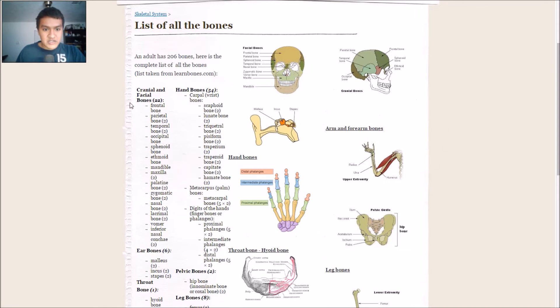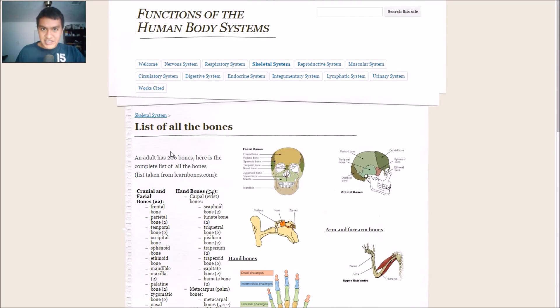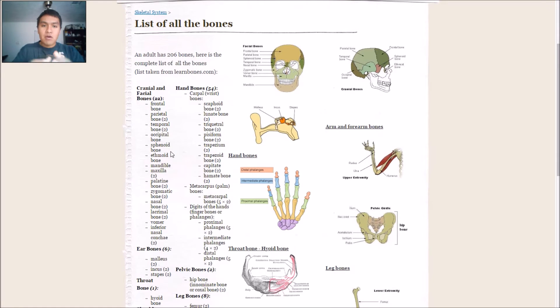I'm going to include the link to this website so you can get all the bones and memorize them. But the extra challenge is to know all the bones by specific area. So if someone says, 'The cranial and facial bones, what are they?' you can just list them off. Hand bones, you can just list them off.